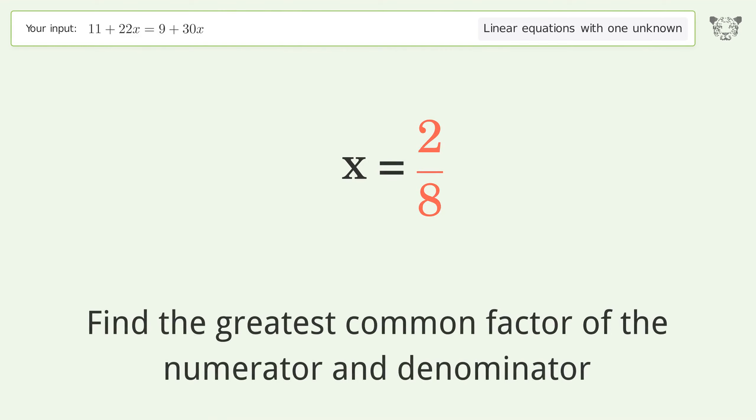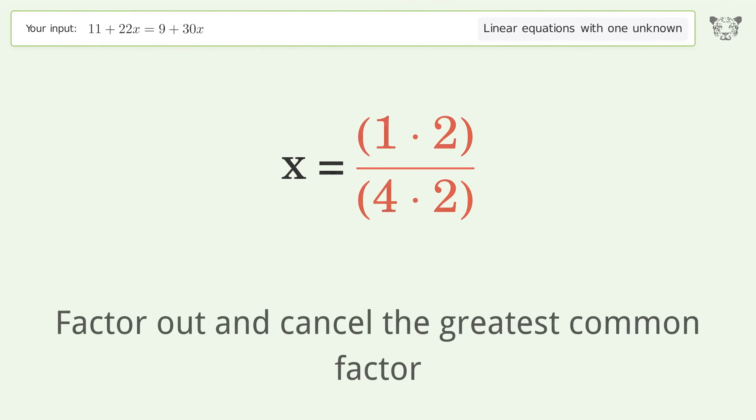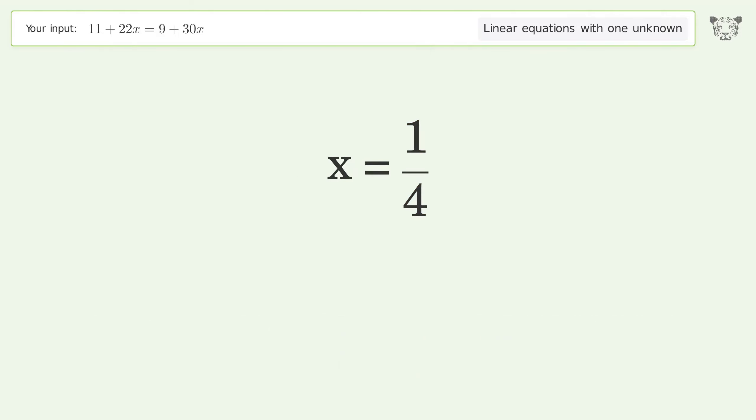Find the greatest common factor of the numerator and denominator. Factor out and cancel the greatest common factor. And so the final result is x equals 1 over 4.